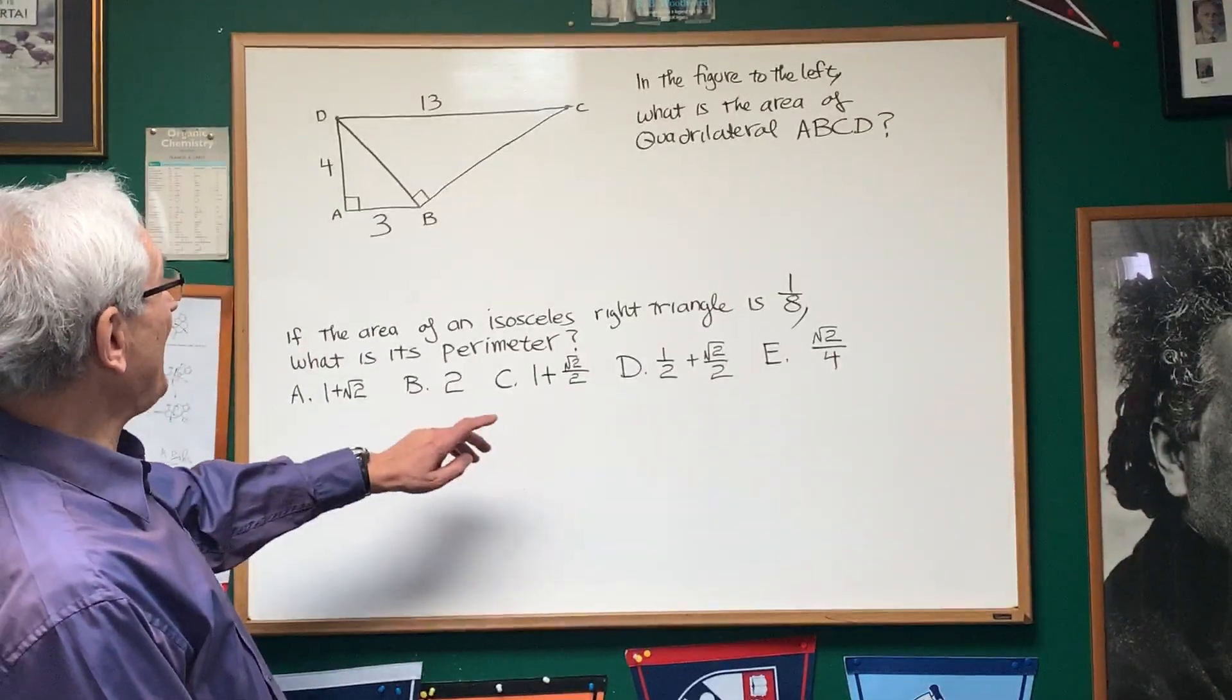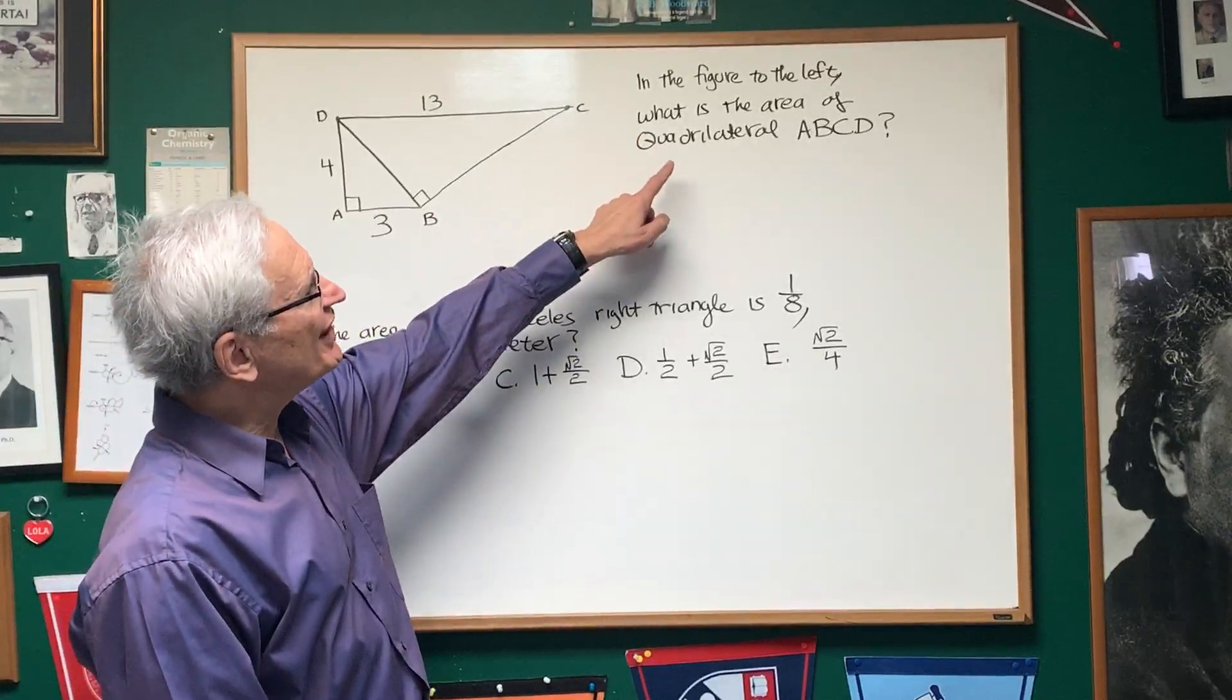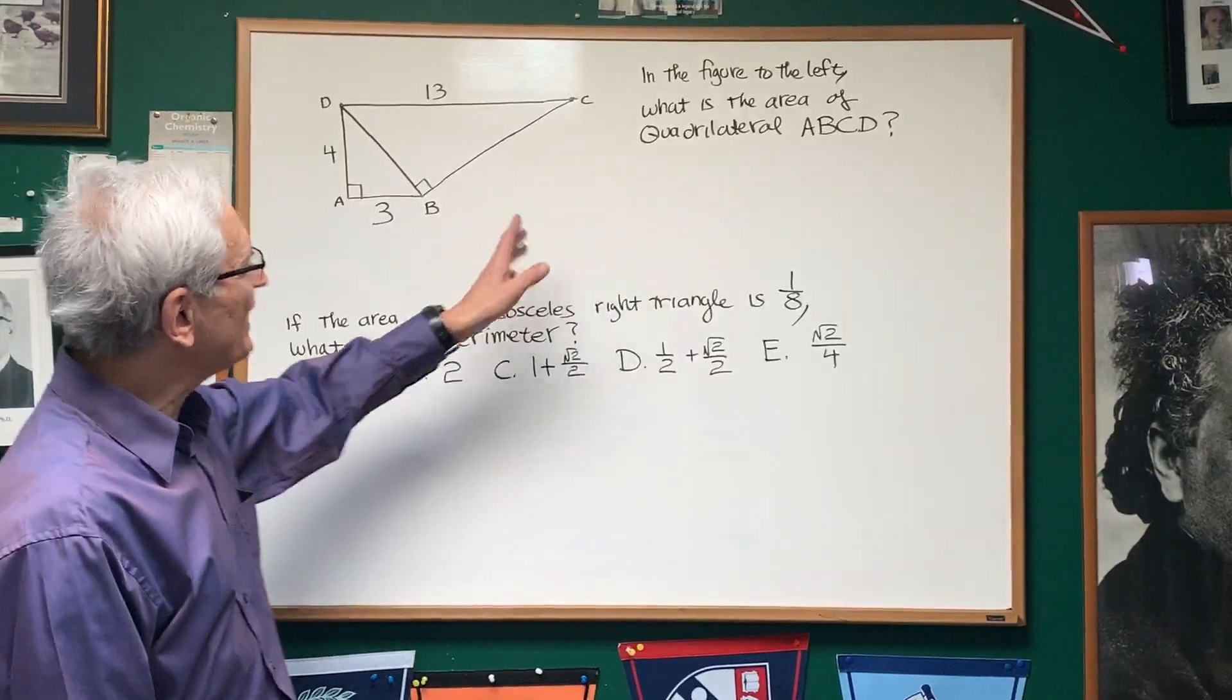I am here today. We're going to do a math problem with mathematician Professor Lewis Boyce. All right, Professor, show us what you got. Sure. Let's start here. This is going to be a couple of geometry problems. In the figure to the left, what is the area of quadrilateral ABCD?